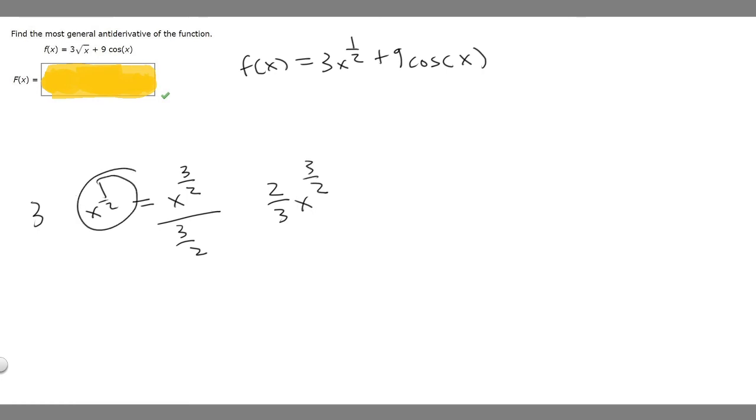But that's just the antiderivative of x to the 1 half, so we have to multiply by 3. If we multiply this by 3, it's going to be 6 over 3, because 3 times 2 is 6. Then that's the same thing as 2, so 2x to the 3 over 2.